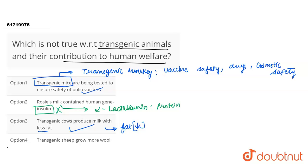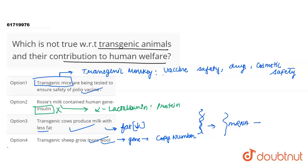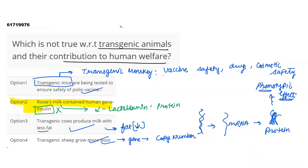Option 4: transgenic sheep grow more wool. For the wool production gene, we will increase its copy number, which increases the amount of the protein. This increased amount of protein has a significant increased phenotypic effect, and in sheep's case this phenotypic effect is increased amount of wool. So only option 2 is the correct statement.